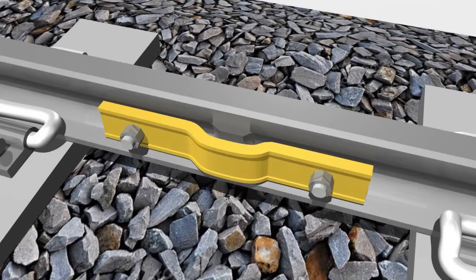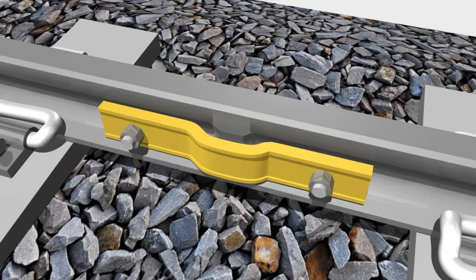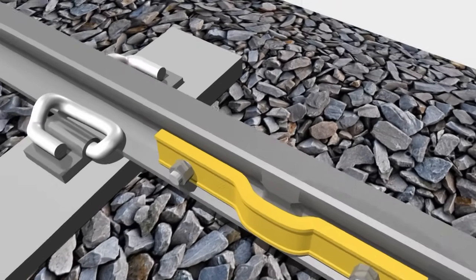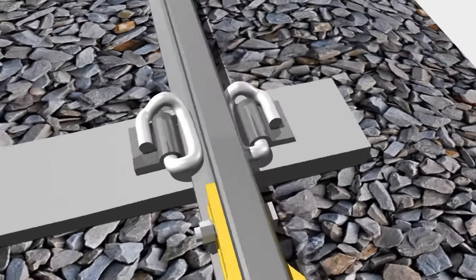There is another type of fish plate called a joggled fish plate. This is a specially designed fish plate with a convexity in the center, to accommodate the weld collar at newly welded joints, to protect defective welded joints, and to carry out emergency repair of weld failures.